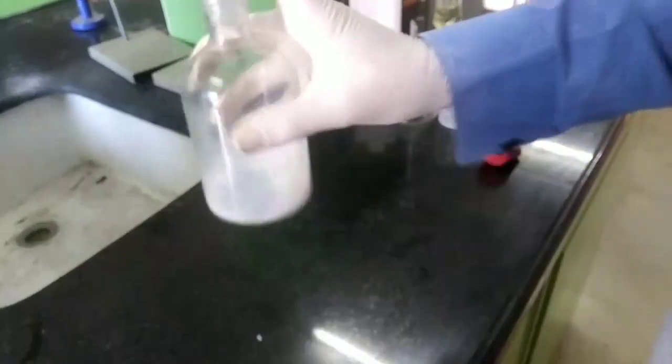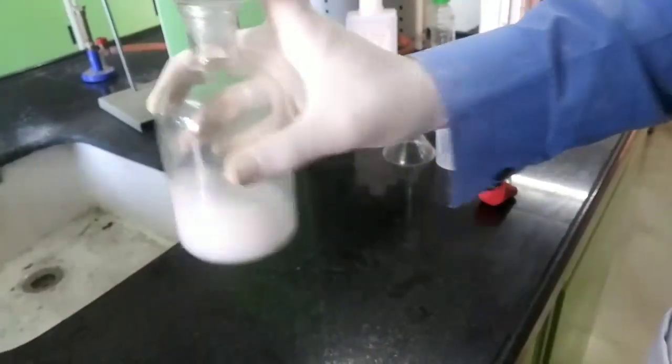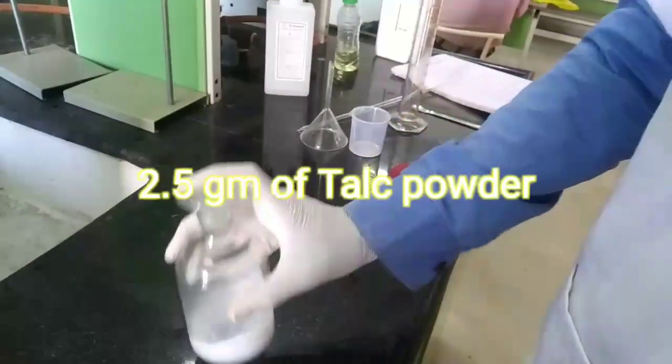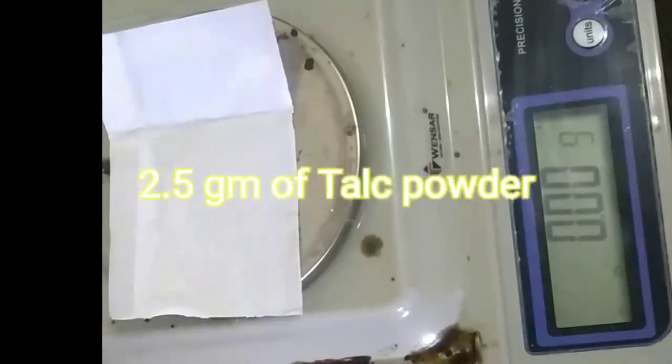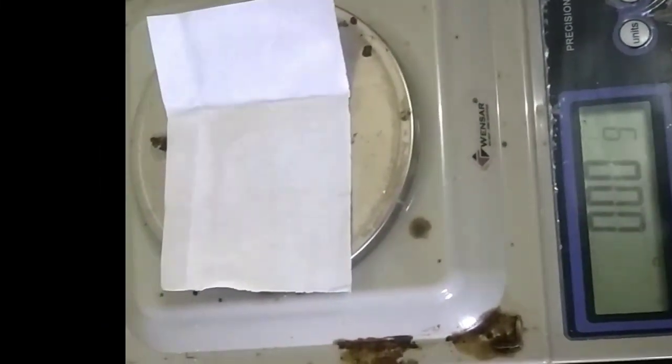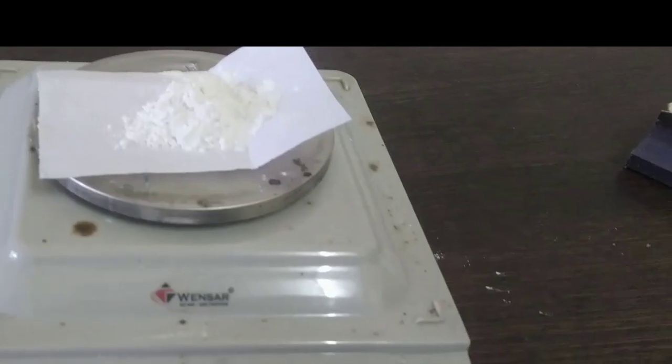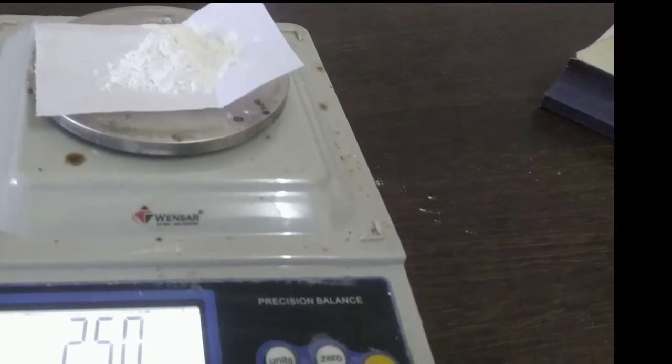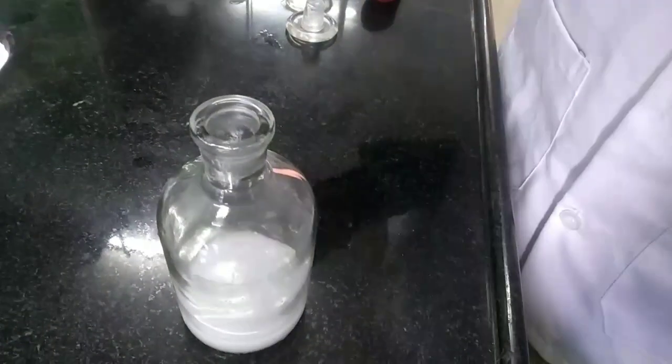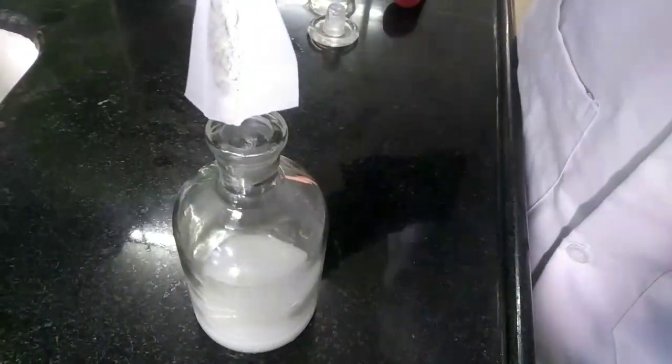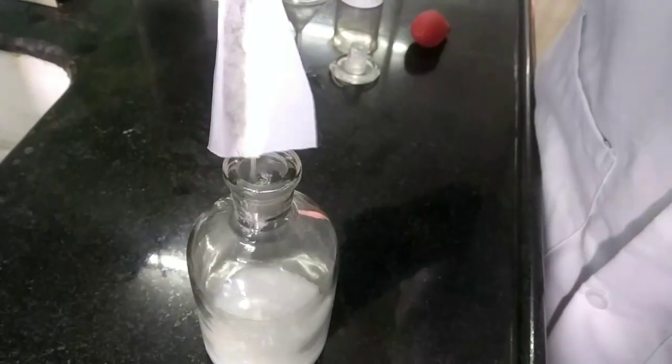Shake it vigorously. After this, we need to add talc powder. We will measure 2.5g of talc powder for our 50ml batch and add it to the solution.